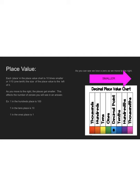Each place in the place value chart is 10 times smaller, or one tenth the size, of the place value to the left of it. As we move to the right, everything's becoming 10 times smaller. For example, a 1 in the hundreds place is 100. As I move to tens, it turns to 10. As I move to ones, it's just 1. If I have 100 and divide by 10, I get 10. If I have 10 and divide by 10, I get 1. So moving right means dividing by 10.